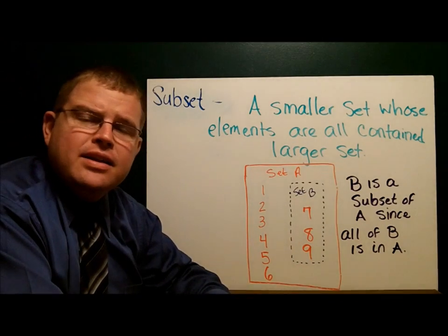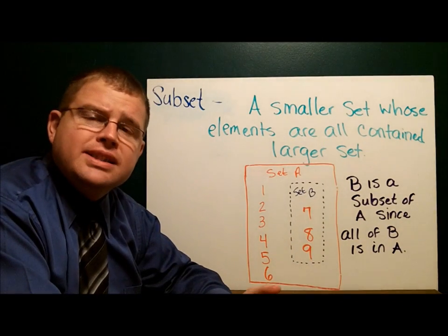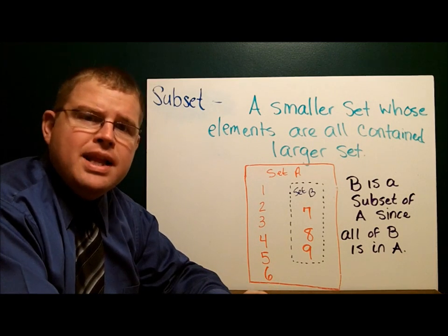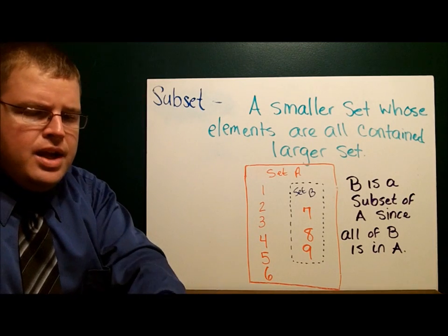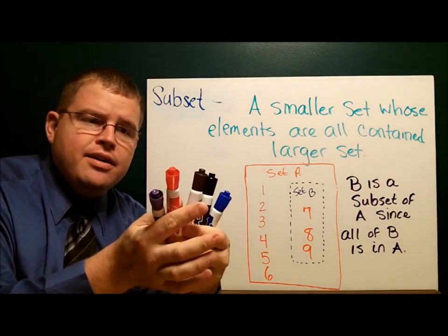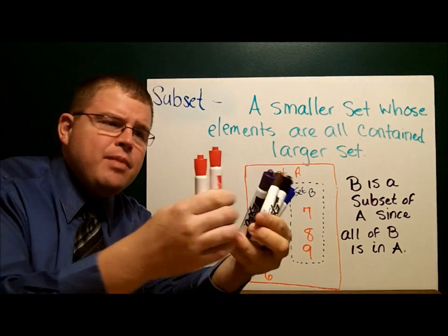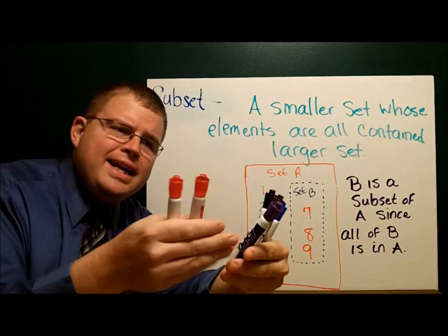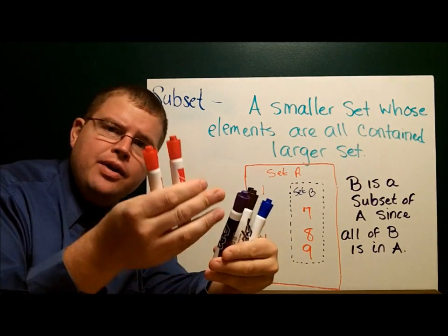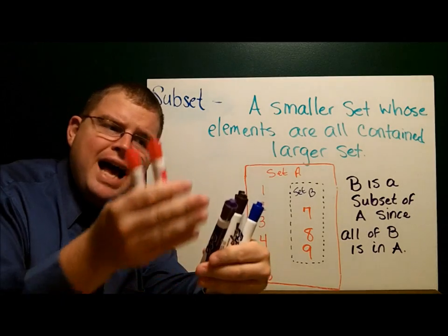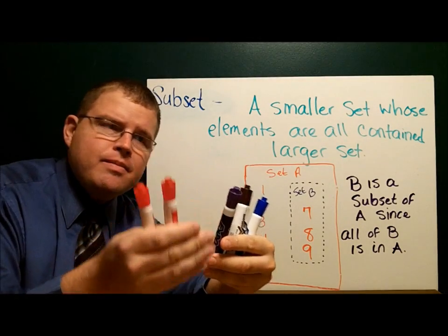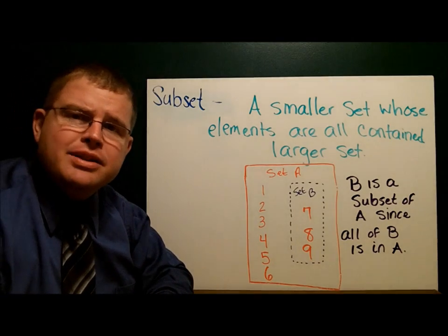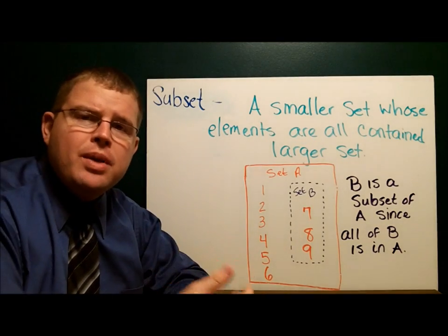When we deal with sets, we often look at what we call subsets. A subset is a smaller group of things within a bigger set. Here are my markers again. Notice in this set of markers, I have two reds. The red are contained in this bigger set. The red markers are a subset of this bigger set. When we have a smaller set whose elements are all in a bigger set, we call that a subset.